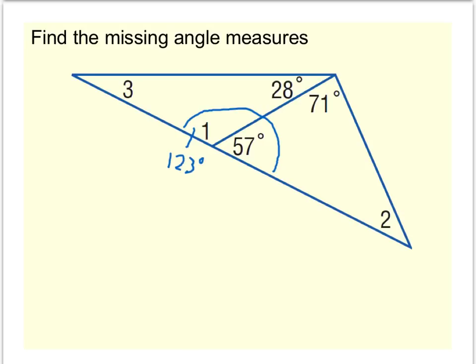Next, take a look at this red triangle. In that triangle, we know 2 of the 3 angles. We know 57 degrees, 71 degrees, and angle 2 is unknown.